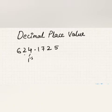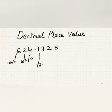In the whole number part: four is in the units place, two is in the tens place, and six is in the hundreds place. Coming to the decimal part, one is in the one-tenths place and seven is in the one-hundredths place.